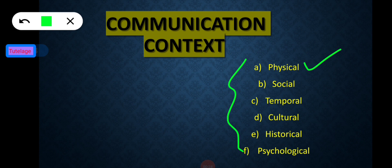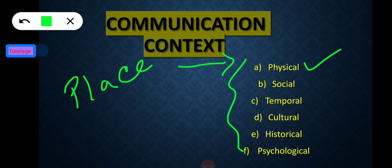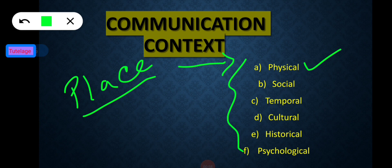The first dimension is physical context. Physical context basically relates to the place of communication. Depending upon the place of communication, the way of interaction differs. For example, the way you interact in a market or a party is different from how you talk to your friend in the library. So physical context implies the place of communication, and the way of communication basically depends on the place.